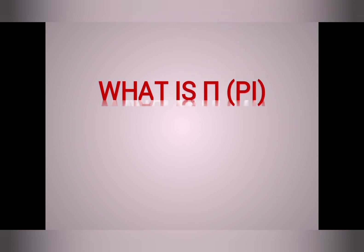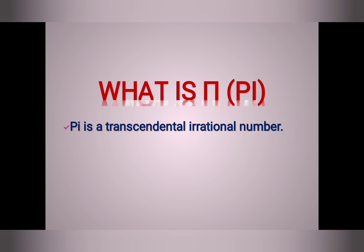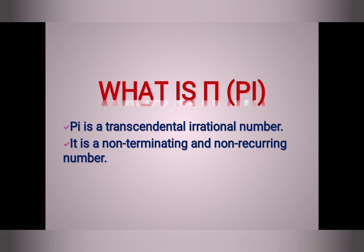Before discussing about pi approximation day, I would like to give you some facts about pi. So, what is pi? Pi is a transcendental irrational number. There are two types of real numbers: rational numbers and irrational numbers. Transcendental numbers are numbers which are not the root of any polynomial equation with rational coefficients. Pi is a non-terminating and non-recurring number.